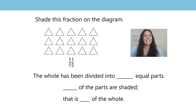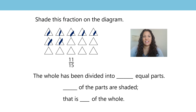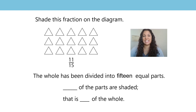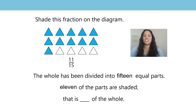Let's practice that again. It says, shade this fraction on the diagram. The fraction is 11 fifteenths. First, we need to count how many equal parts there are: 1, 2, 3, 4, 5, 6, 7, 8, 9, 10, 11, 12, 13, 14, 15. I've counted 15 equal parts, so the whole has been divided into 15 equal parts. Now let's think about how many of those equal parts need to be shaded in. If I have 11 fifteenths, that means 11 of the parts are shaded. That is 11 fifteenths of the whole.